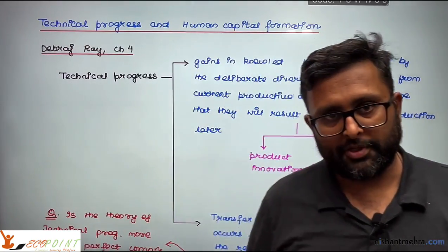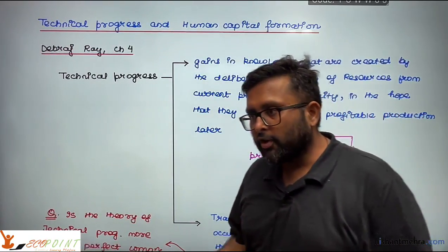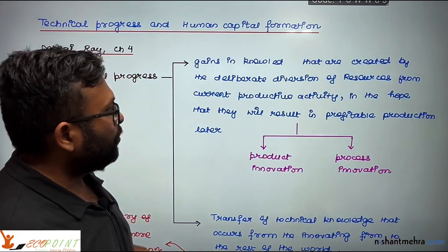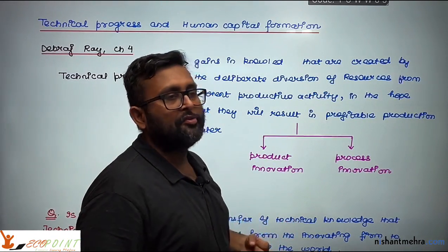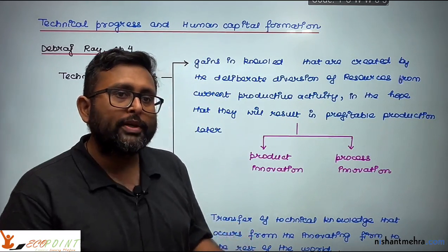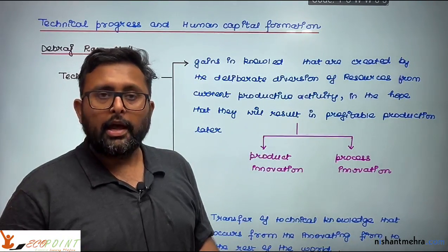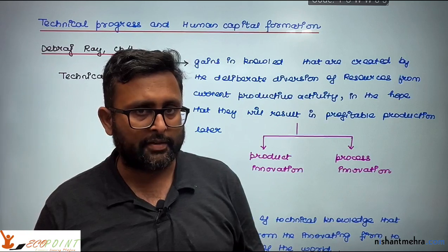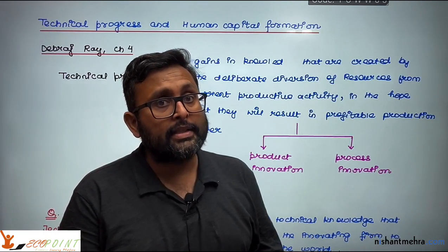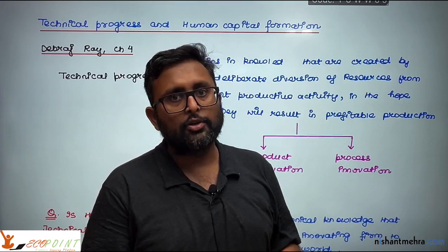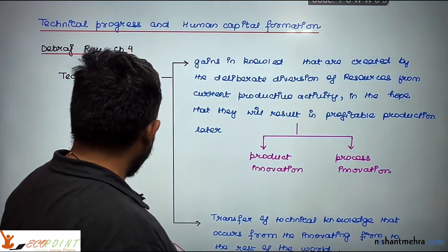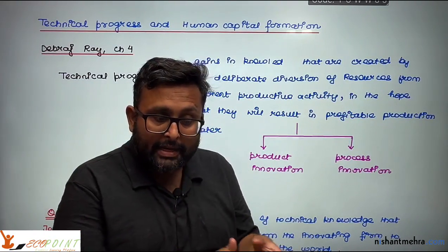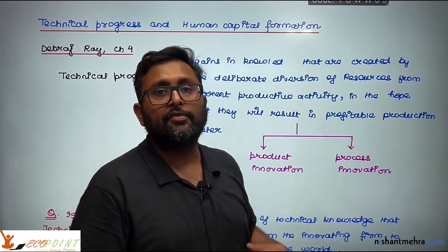Technical progress and human capital formation. Now what we are going to look at is how we can first define technical progress. One kind of technical progress would be where my firm is doing some kind of research and development — the incentive for the innovator is to earn profits from that R&D. I am going to deliberately divert resources from my current productive activity so that I can increase future profits.